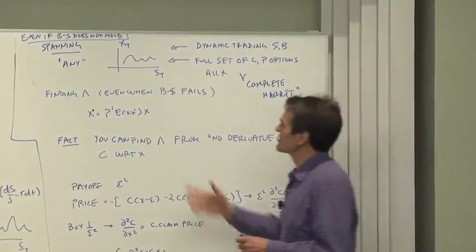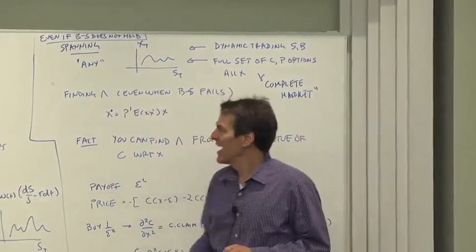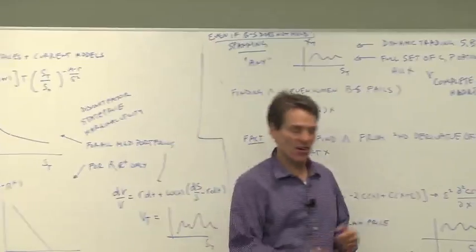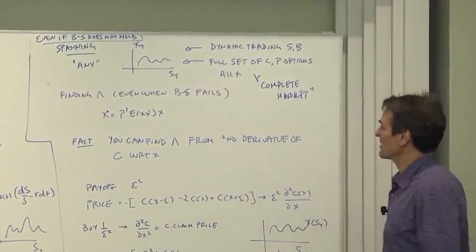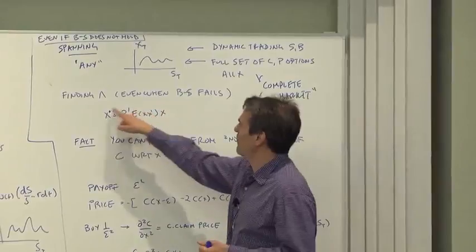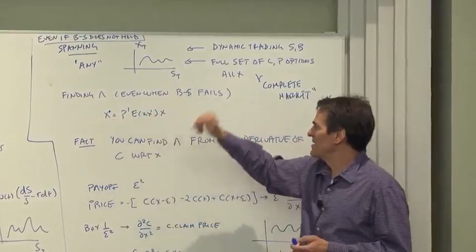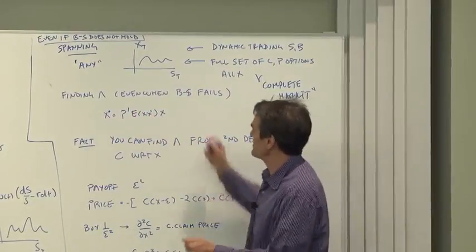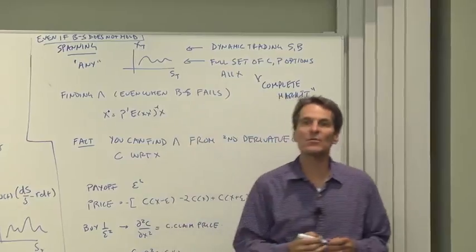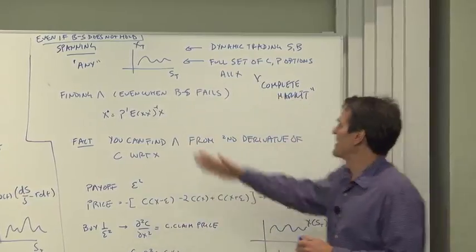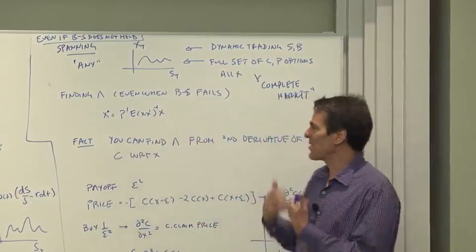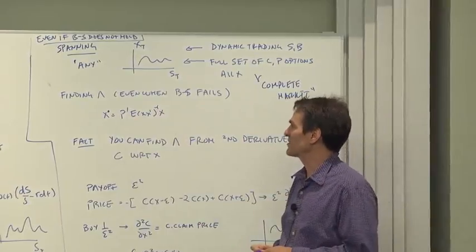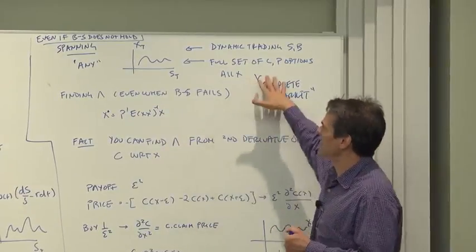Now that leads us to when Black-Scholes fails, how would we find our discount factor, our contingent claims price? That looks like an unpleasant job, doesn't it? Now we had it before. There was x prime p e of x x prime inverse times x. What's a similar procedure for finding the contingent claims price stochastic discount factor and so forth from a given set of option prices?